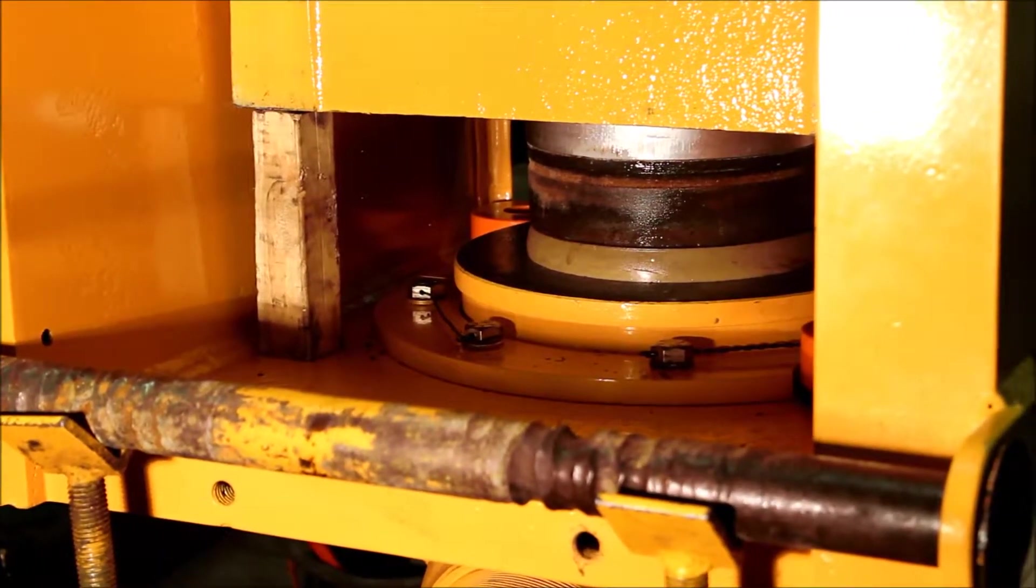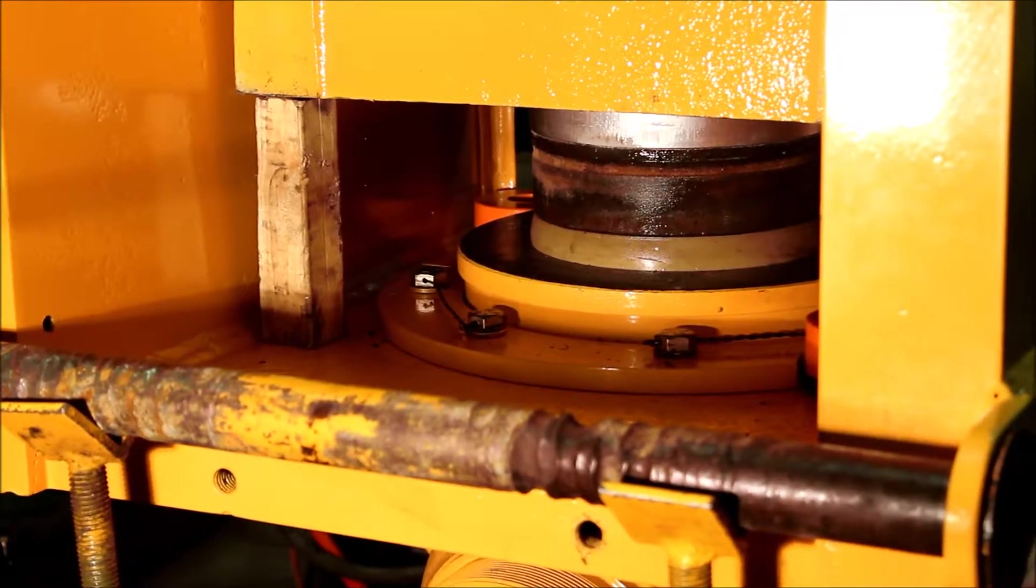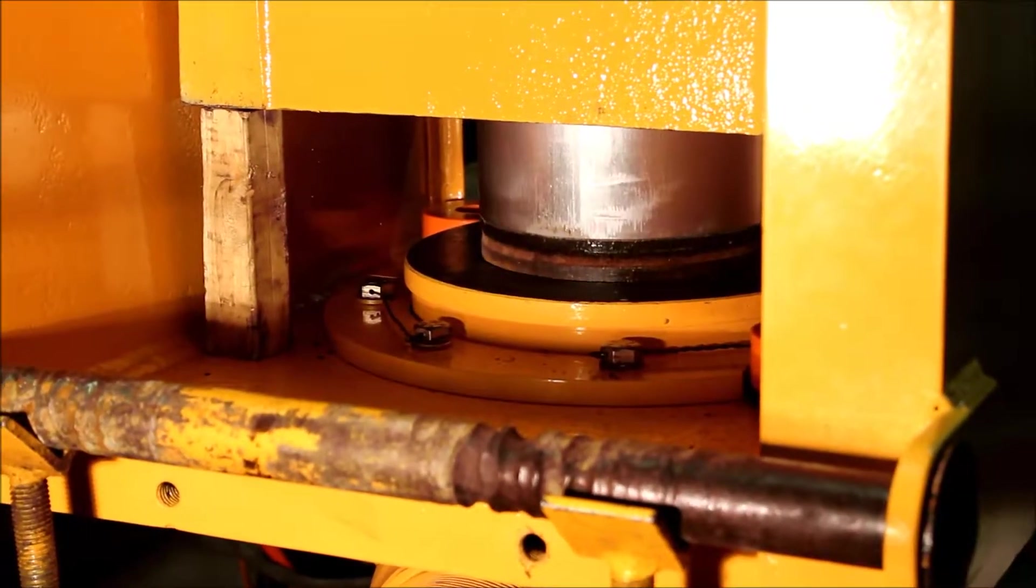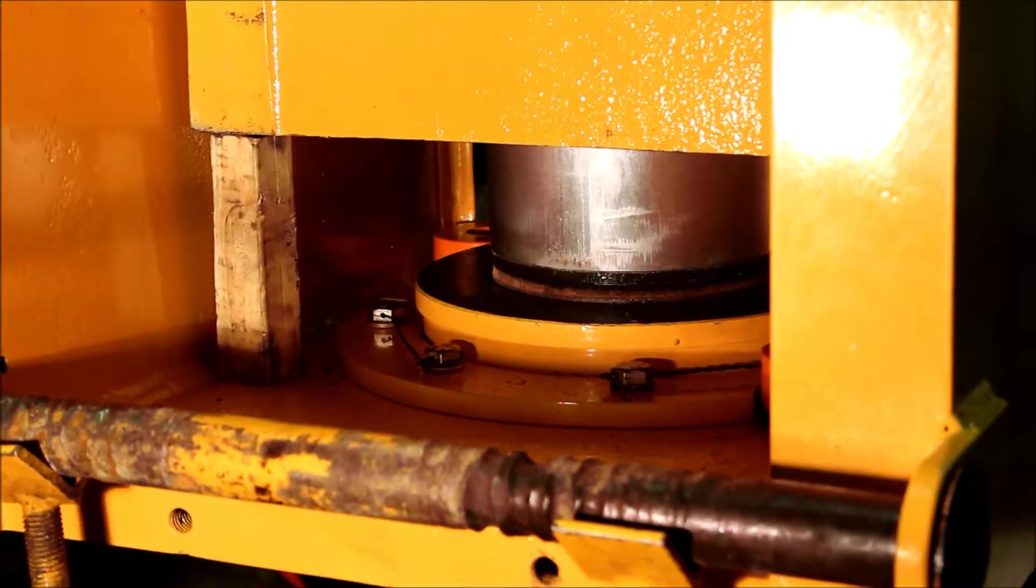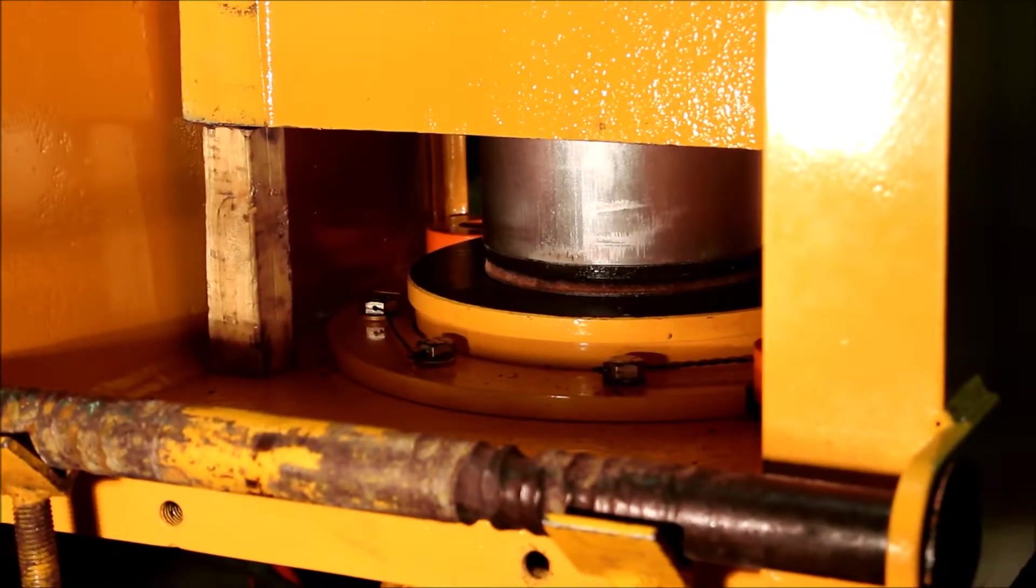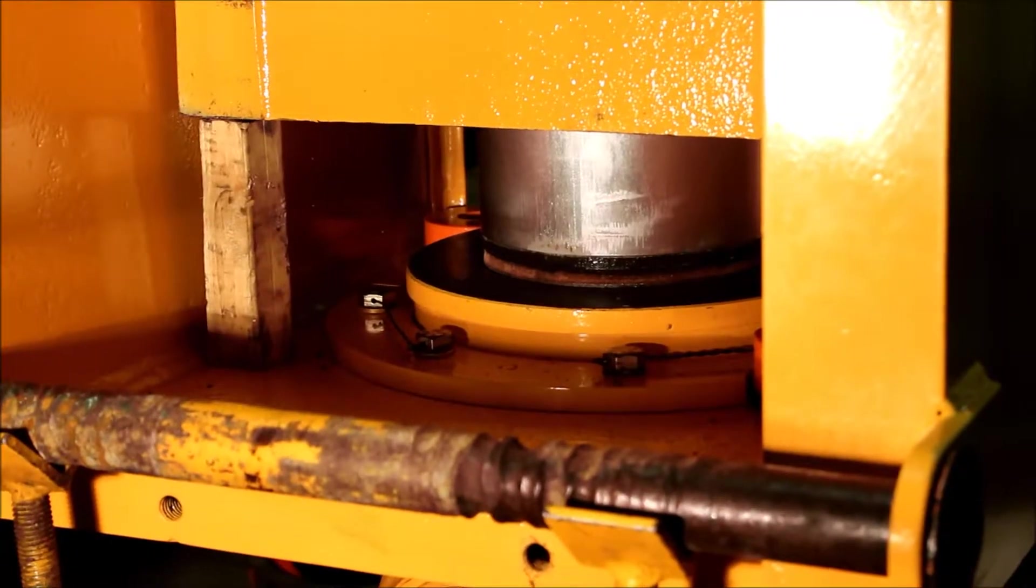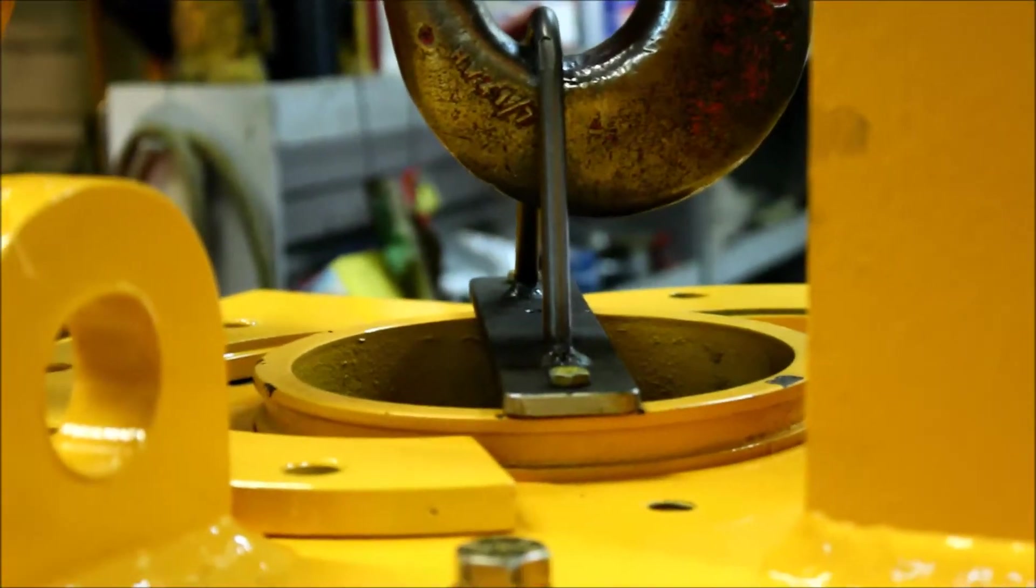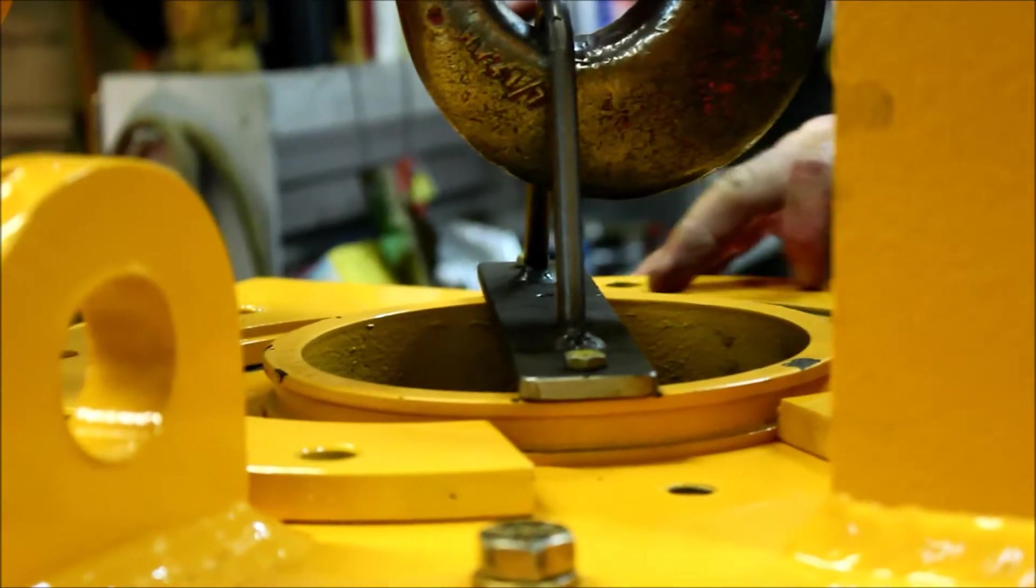And once that's done, the seal and center tube should drop right into the anvil. There we go. Look at that. And it just, it bottoms out now. Like you just let it all the way down. Well, no. I let it down to the retaining ring grooves on the top of the center tube. And now we're going to install the center tube retaining rings.